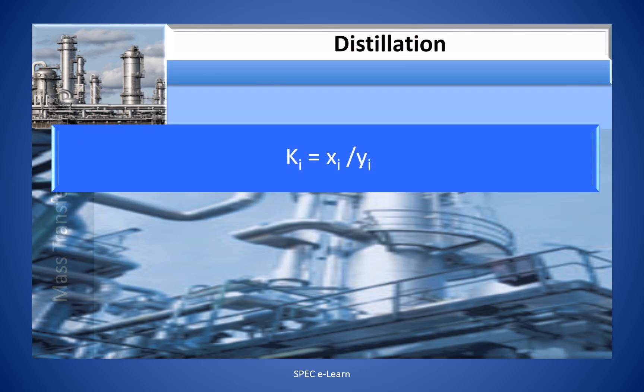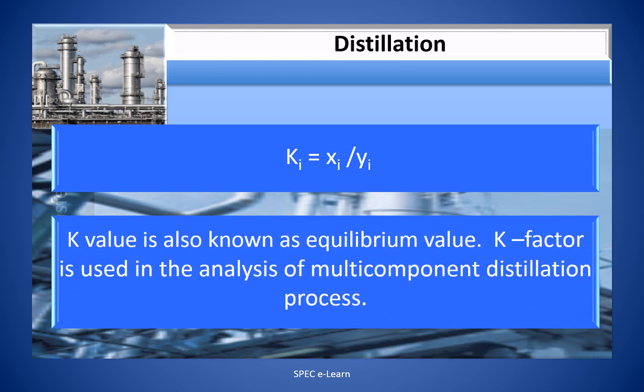In a multi-component mixture, the K value of component i is expressed as y_i divided by x_i. K value is also known as the equilibrium value. K factor is used in the analysis of multi-component distillation processes.